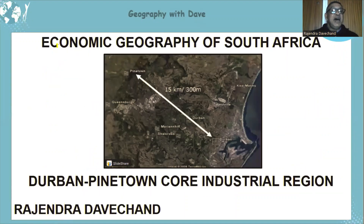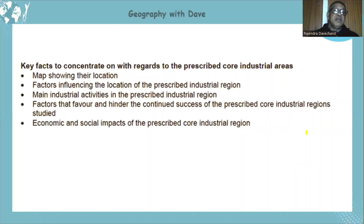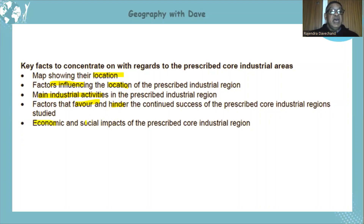Today we're focusing on the Port Elizabeth-Uitenhage area — apologies learners. So let's get going with the Durban-Pinetown core industrial region, a very important region for industrial development in South Africa. We'll look at its location, factors influencing location, factors favouring development, main industrial activities, and factors favouring and hindering the success or development of these core industrial regions.